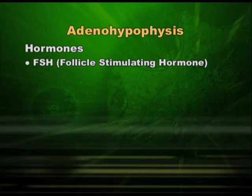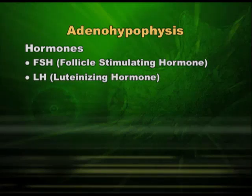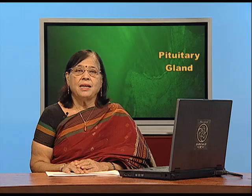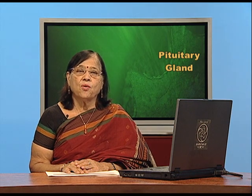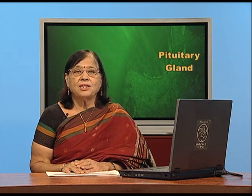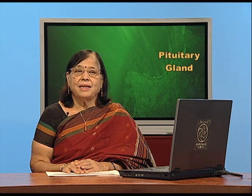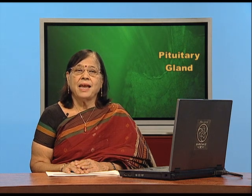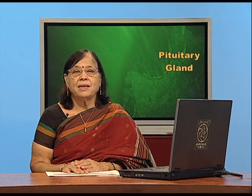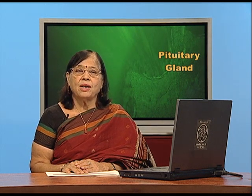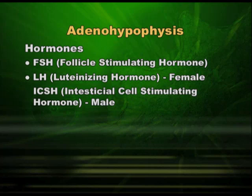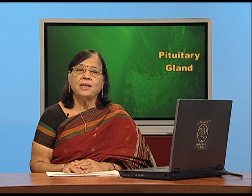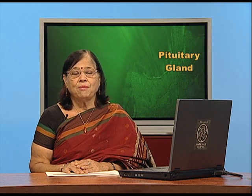The next hormone from the anterior pituitary is LH, luteinizing hormone. It causes luteinization in females — luteinization is the word for ovulation, so LH is the ovulating hormone. In men, since there is no ovulation, the same hormone is called ICSH, interstitial cell stimulating hormone, because it acts on interstitial cells which in turn produce male hormone.